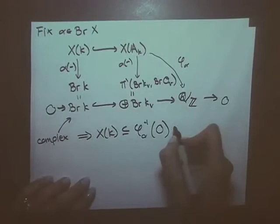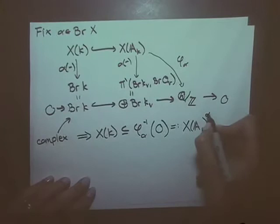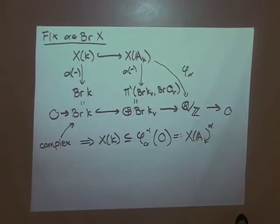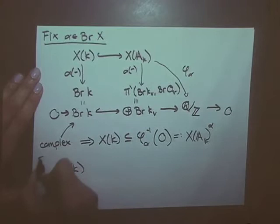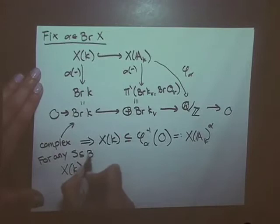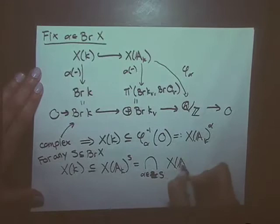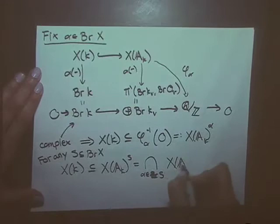We call this set X(A_K)^α — the adelic points that are orthogonal to α — thinking of this element of the Brauer group as giving a pairing. There was nothing special about which α we chose; all we used was that it was in the Brauer group. So for any subset S of the Brauer group, X(K) is contained in X(A_K)^S, the intersection over all α in S. Of particular interest is when S equals the whole Brauer group, and we write X(A_K)^{Br}.